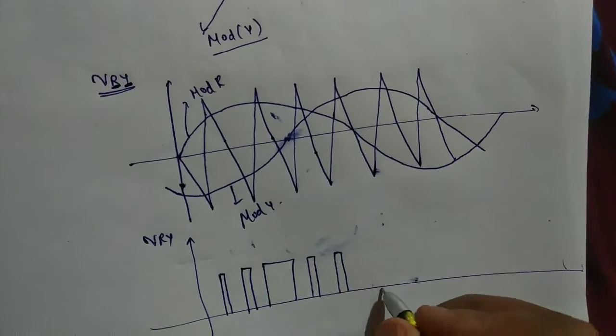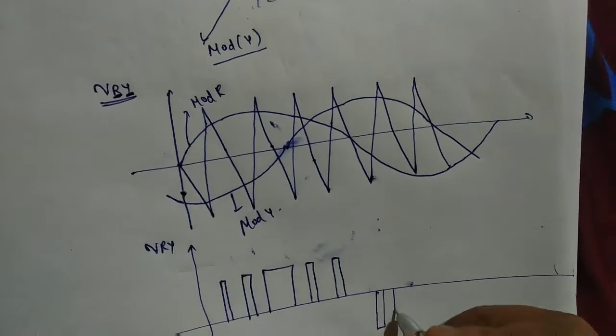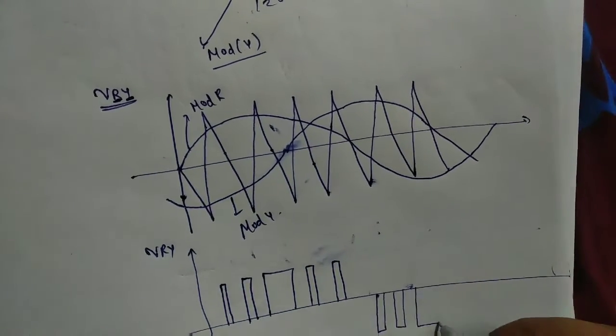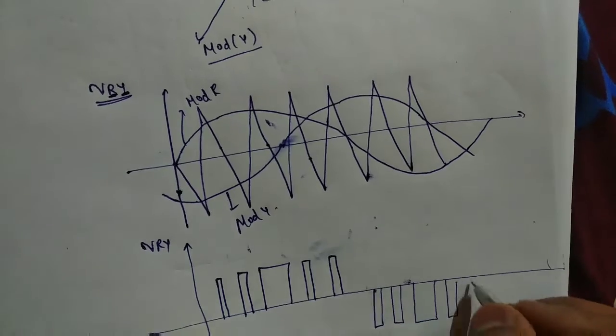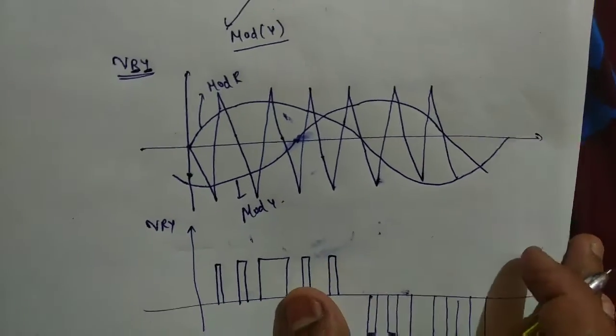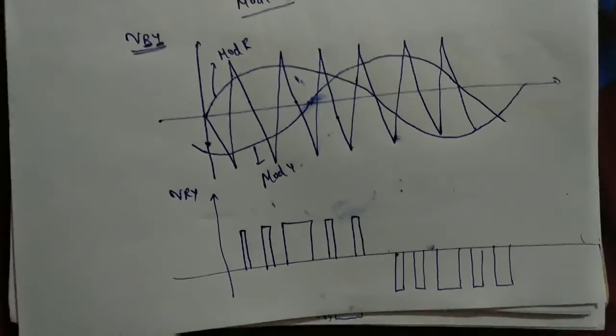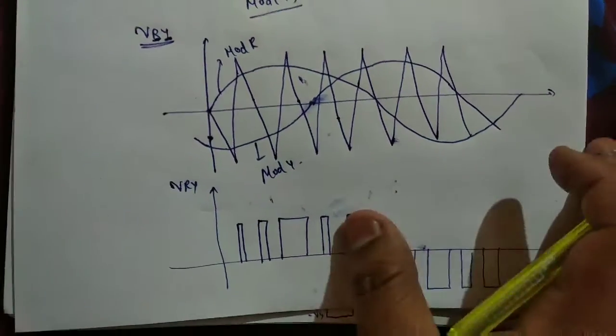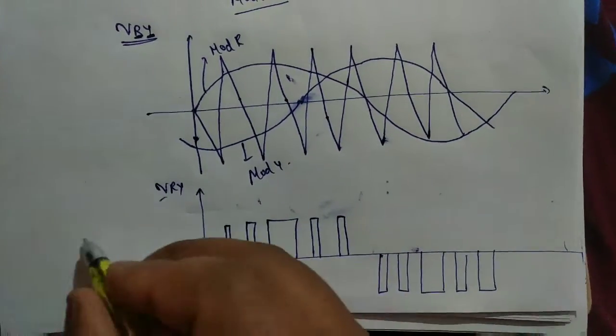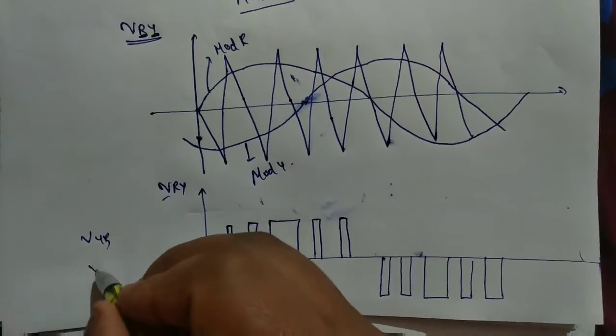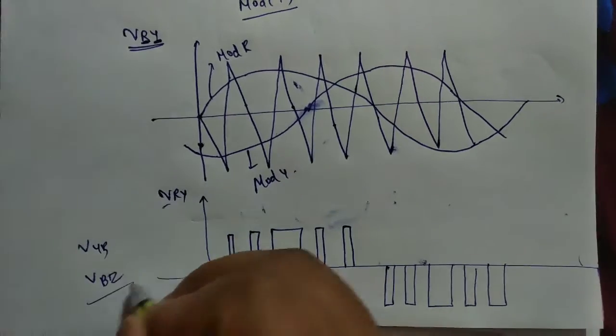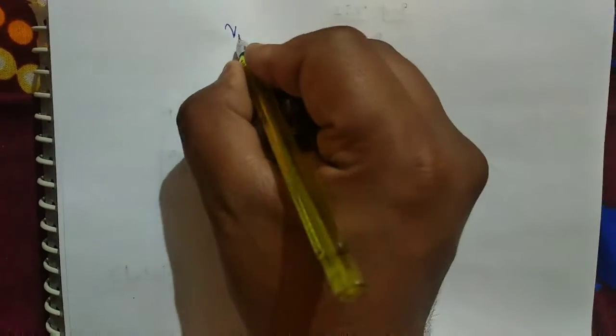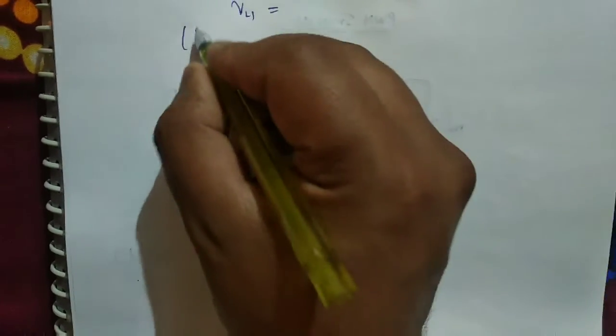V_RY, so we will get waveform like this. In this way we can find line voltages. In a similar way we can find V_YB, V_BR.